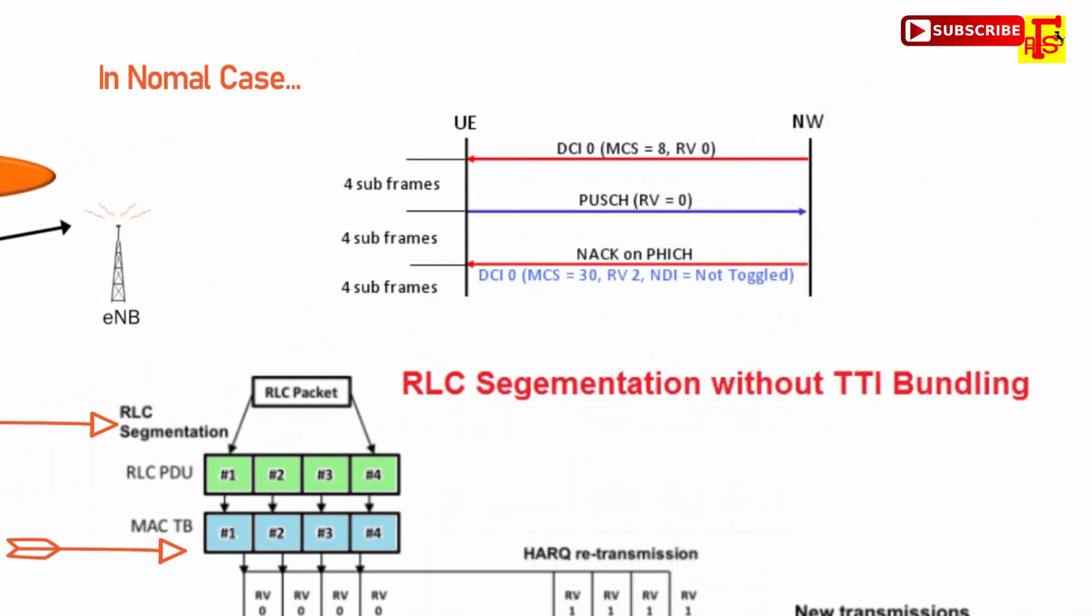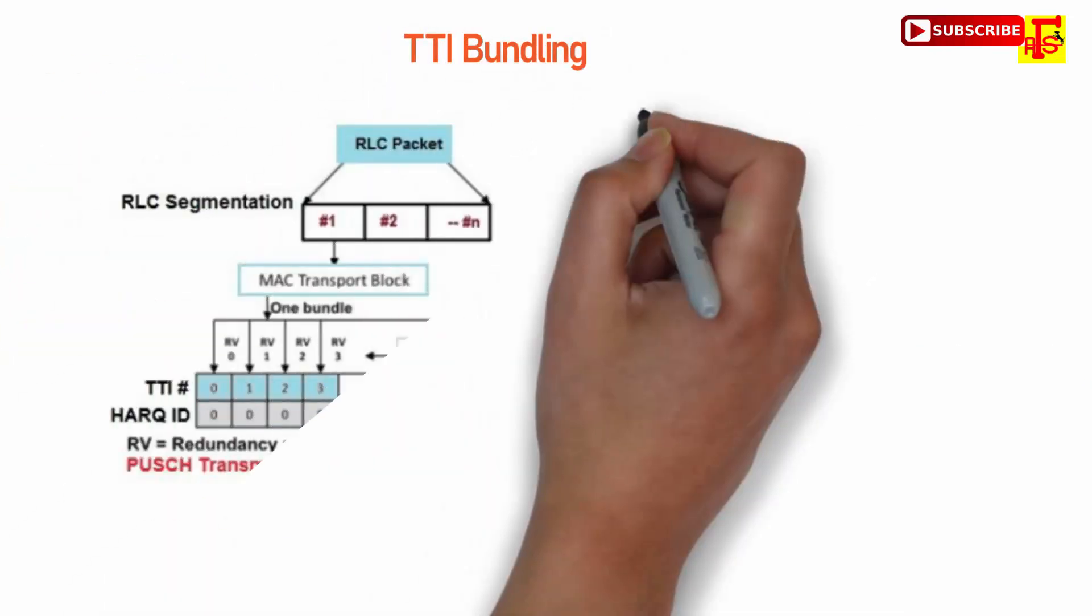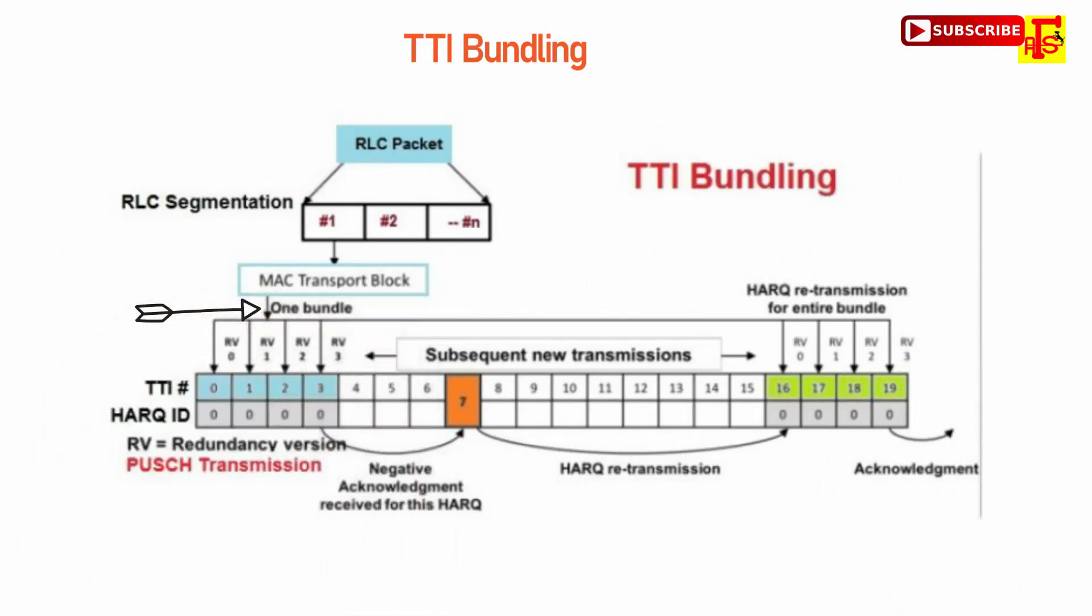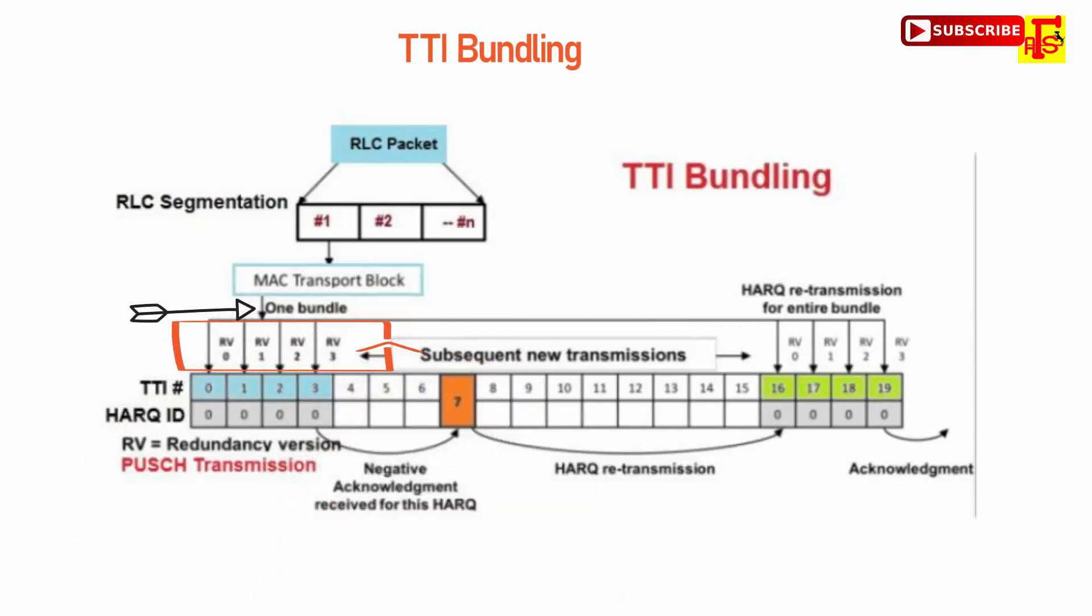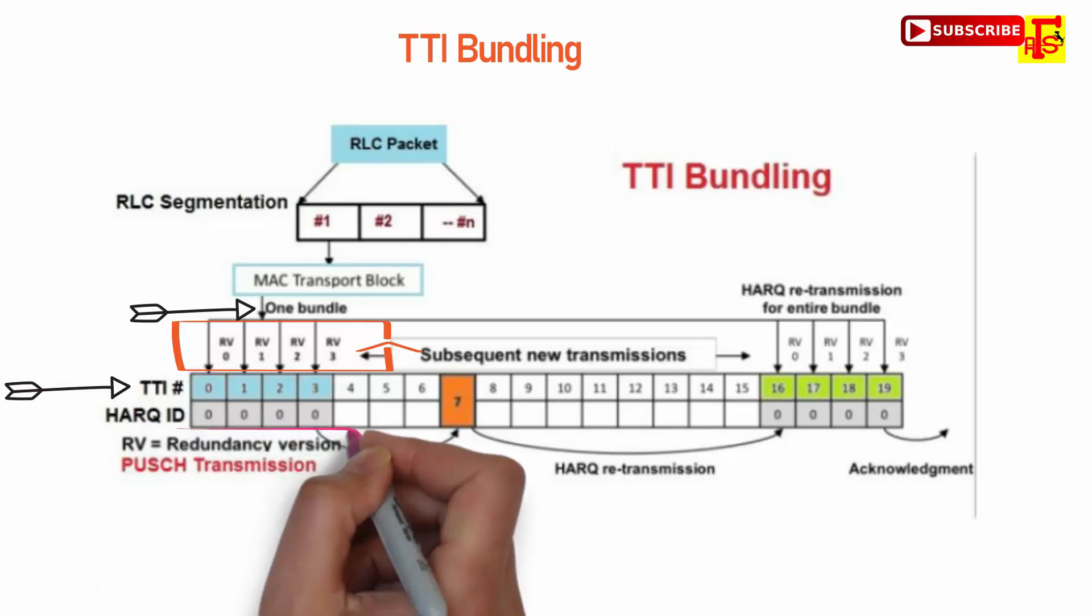In normal case, when network sends grant DCI-0 to UE, UE will transmit PUSCH at only one specific subframe. This means that after the network sends DCI-0 grant message, at plus 4 subframe, UE will transmit PUSCH at one specific subframe. TTI bundling is a method in which UE transmits PUSCH in multiple subframes in a row. Multiple subframes means according to 3GPP, UE will transmit same data packet in four consecutive TTIs with different redundancy versions, different RV. And for this, only one grant DCI-0 is required and also only one HARQ feedback per bundle is required.